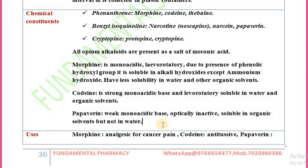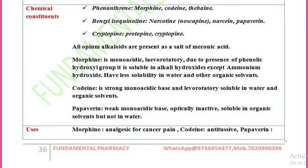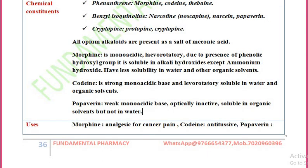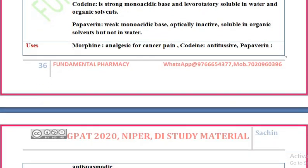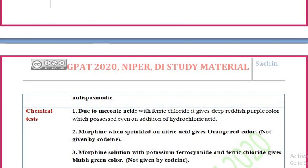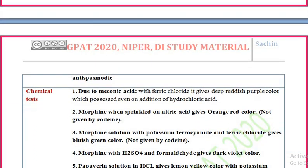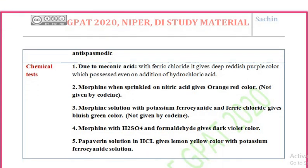The uses of opium alkaloids: morphine is used as an analgesic in cases of cancer pain; codeine is used as an antitussive as well as an analgesic; and papaverine is used as an antispasmodic.